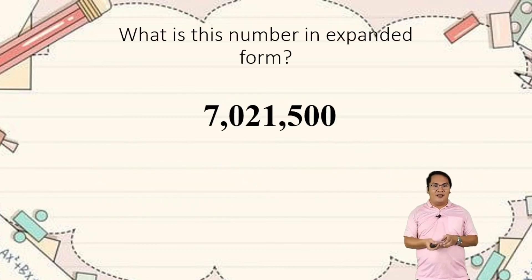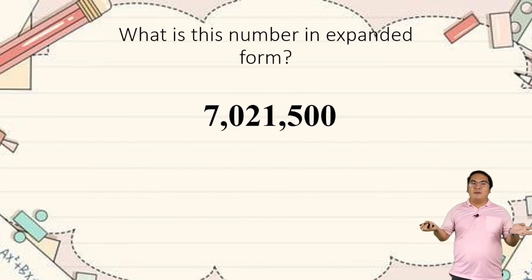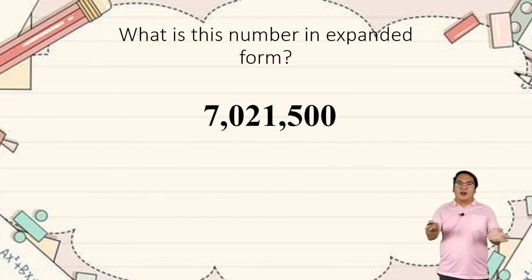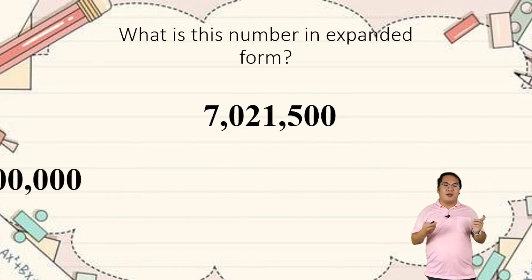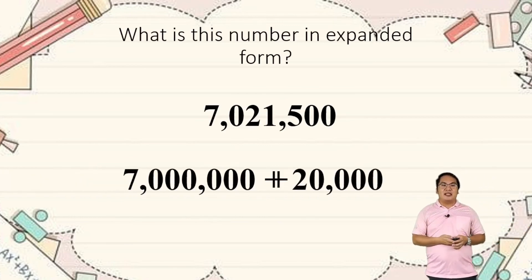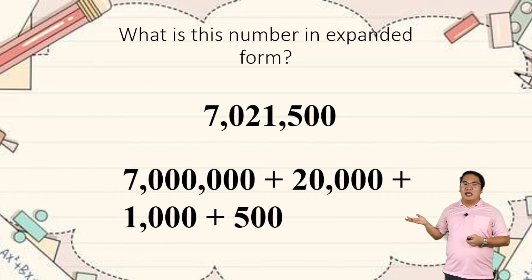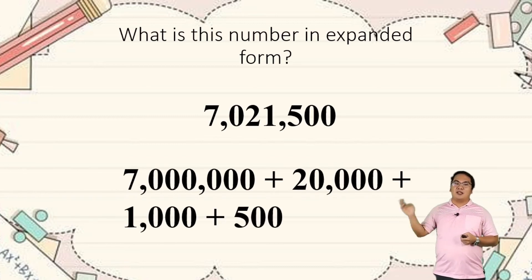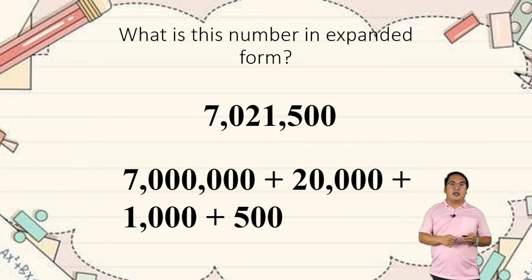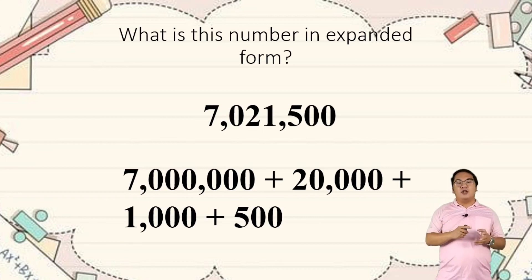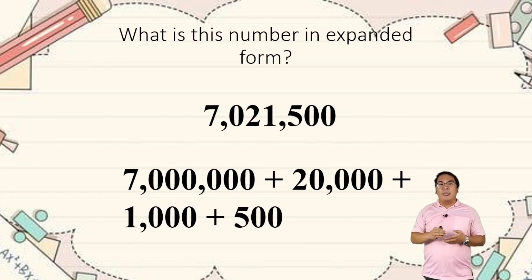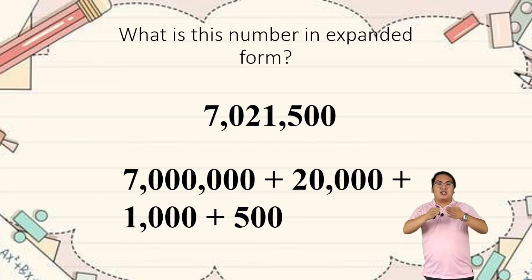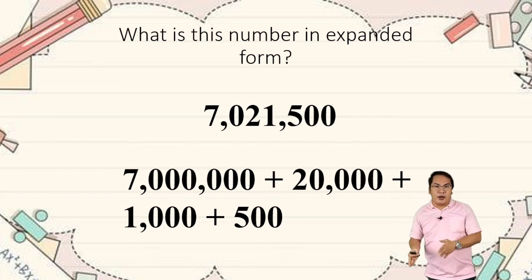How about if we have a million? It's still the same. We have 7,000,000 plus 20,000 plus 1,000 plus 500. We just combine them. If you look at this one, it is expanded — it is just separated according to the place value.